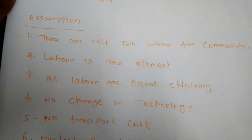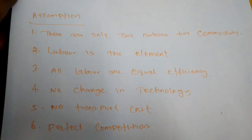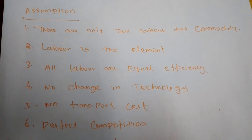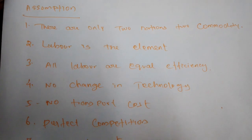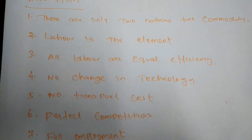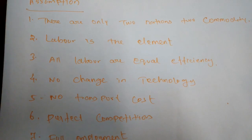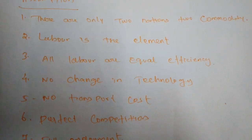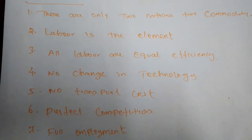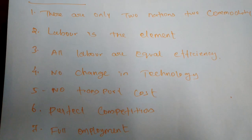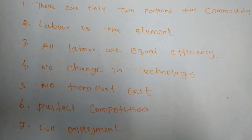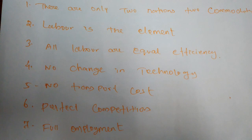For explaining comparative cost advantages we take some assumptions. First, there are only two nations and two commodities. Second, labor is the only element of cost of production, and all laborers have equal efficiency. Third, labor is perfectly mobile within a country but perfectly immobile between countries.